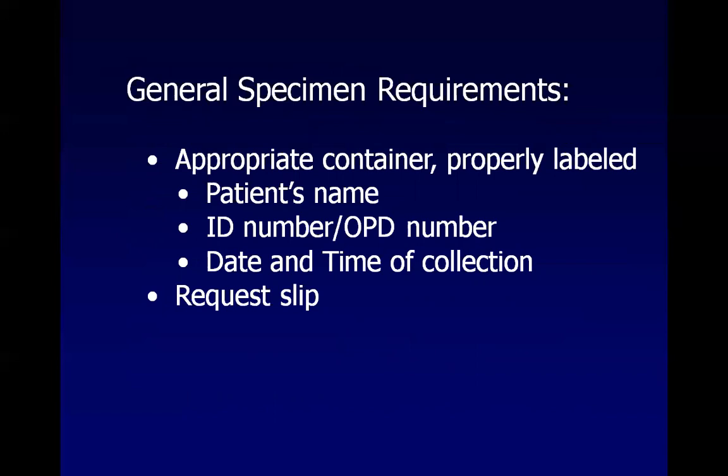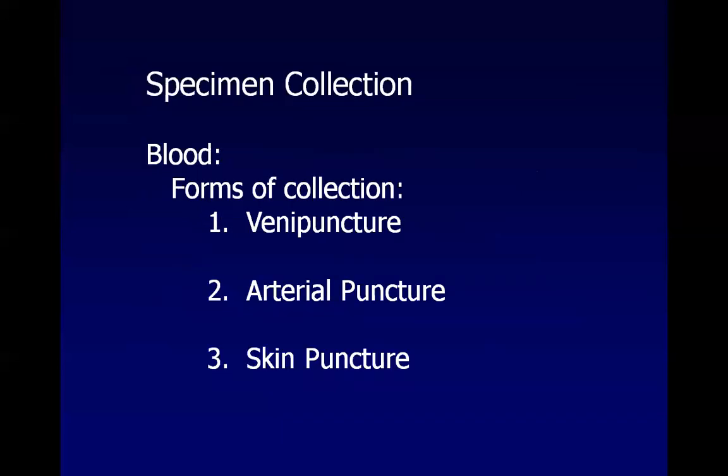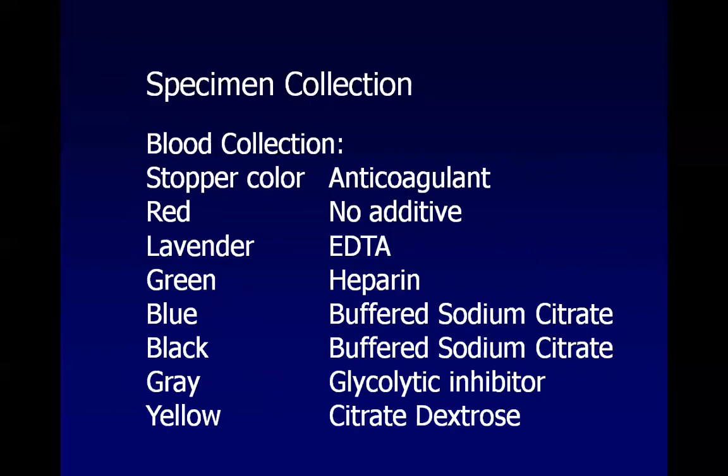Specimen collection requires appropriate containers for urine and stool, presented with a request slip that has matching labels — patient's name, date and time of collection, and ID number. For blood, there are three forms of collection: venipuncture (most common), arterial puncture (used for blood gas analysis), and skin puncture (used when venipuncture is difficult).